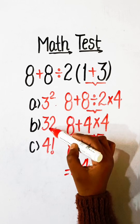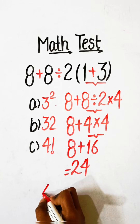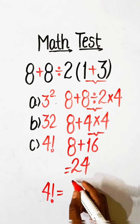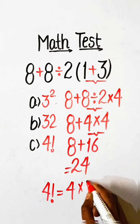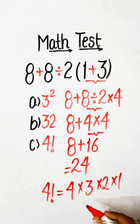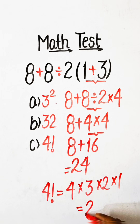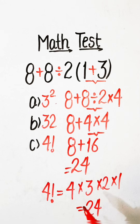8 plus 4 multiplied by 4 is 16, and 8 plus 16 is 24. In the options, 3 squared is 9 and 32 are not correct. The value of 4 factorial is 4 × 3 × 2 × 1 = 24. So our correct option is 4 factorial. If you like my videos, please like, share, and subscribe to the channel.